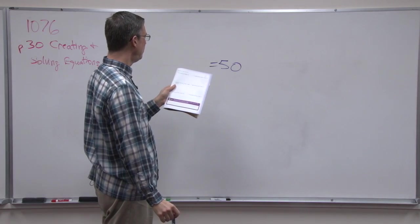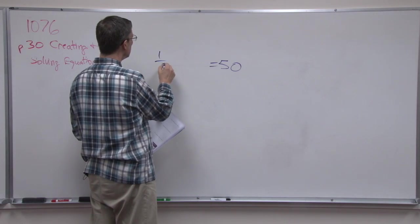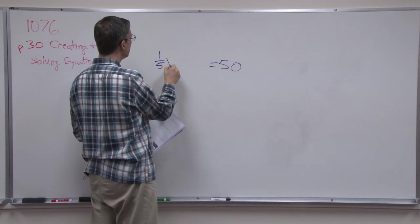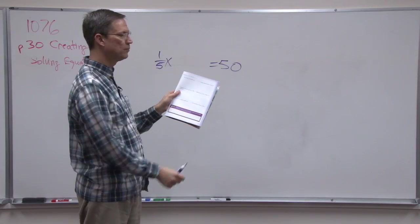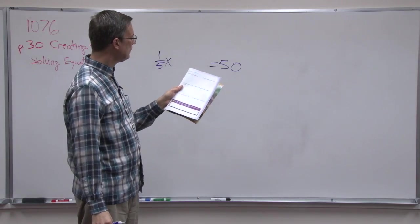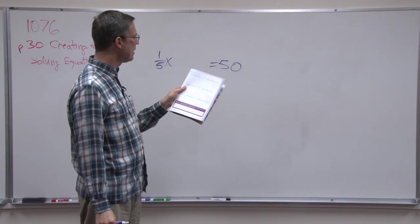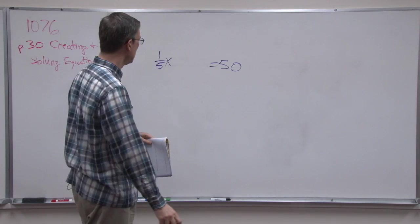It says one-fifth times a number. So that would be like one-fifth, and I think they like to use X in here. In fact, it says in directions, use X for the variable. And then it says 25 more than that.